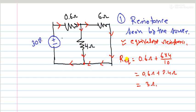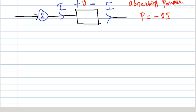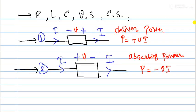30 volts with equivalent resistance 3 ohms. Current delivered by the source is the source voltage divided by equivalent resistance: 30 by 3, that is 10 amperes. Since this is delivering power, 10 ampere current flows through the 0.6 ohm resistor. The current enters the positive terminal and exits the minus terminal, so it's absorbing power.